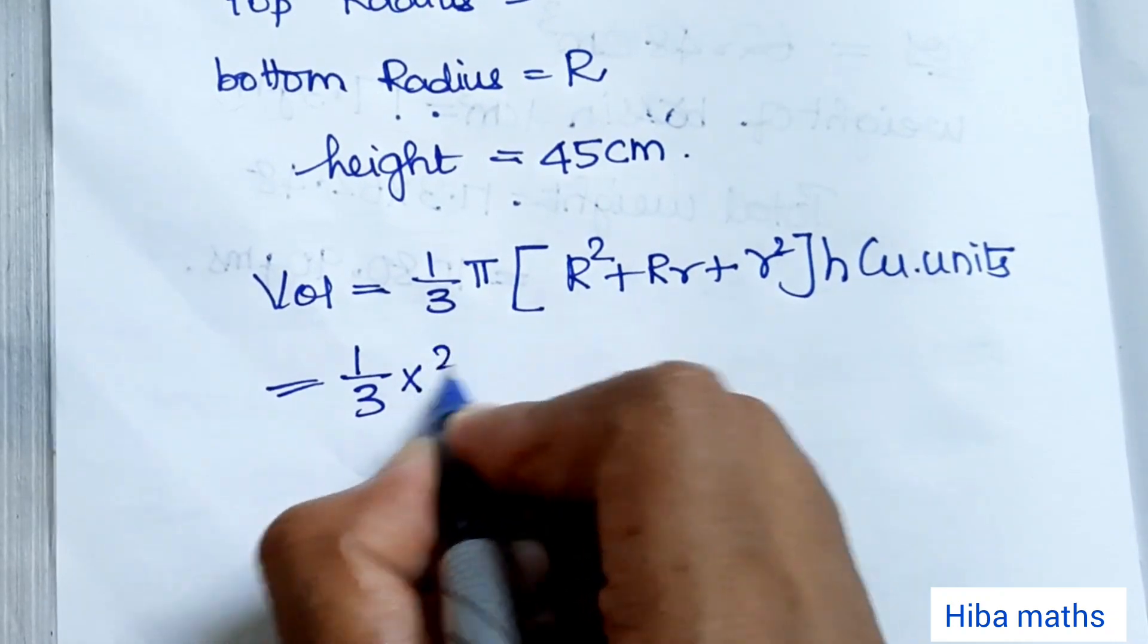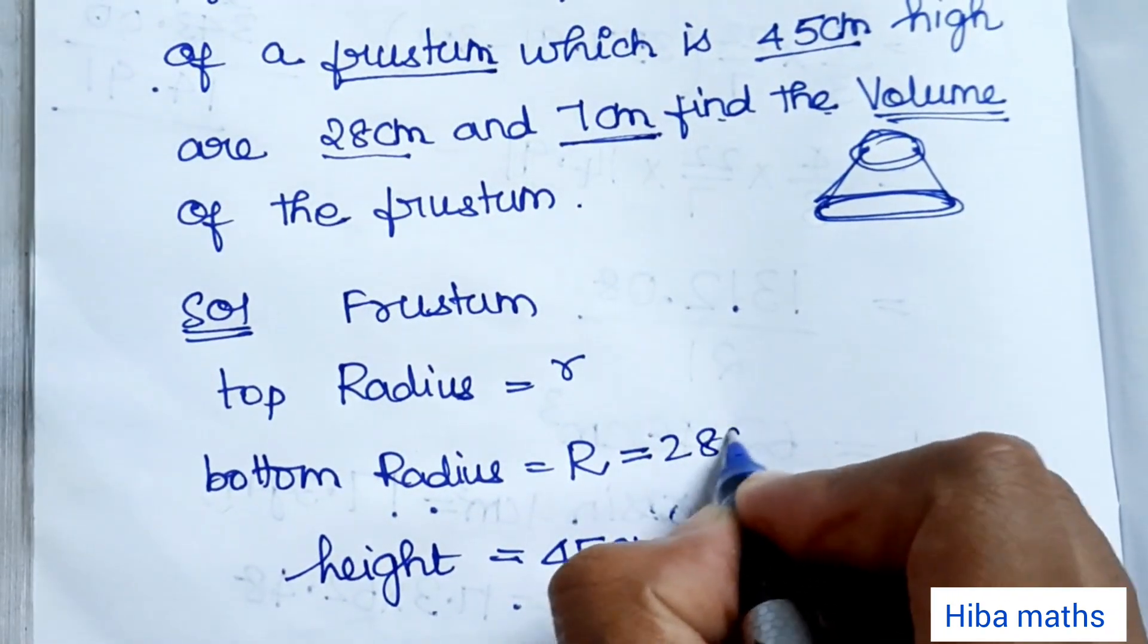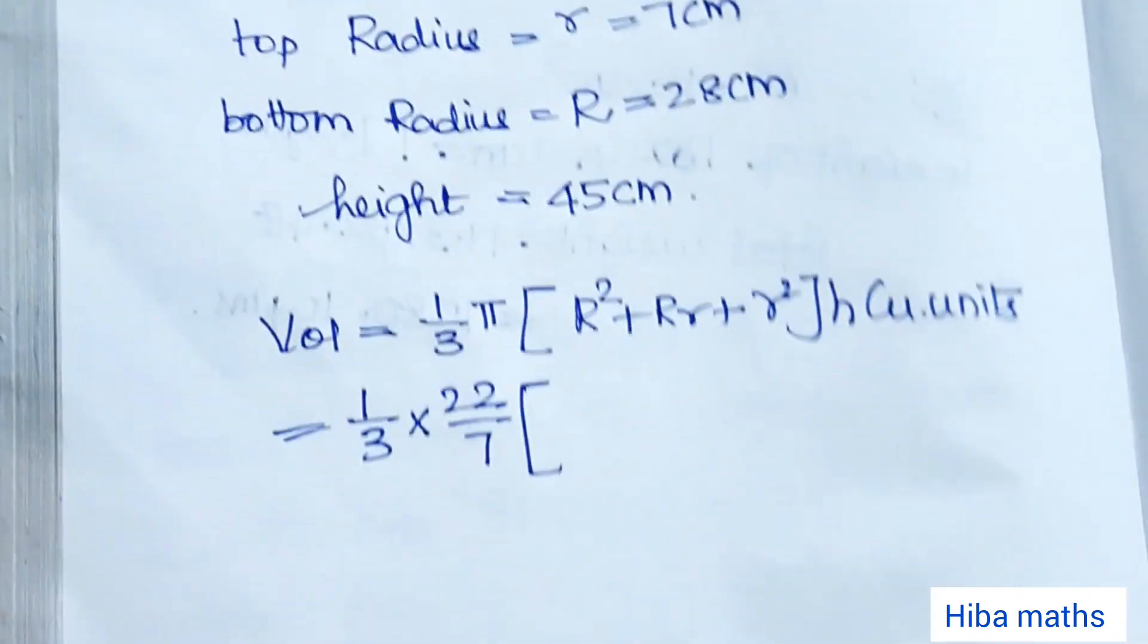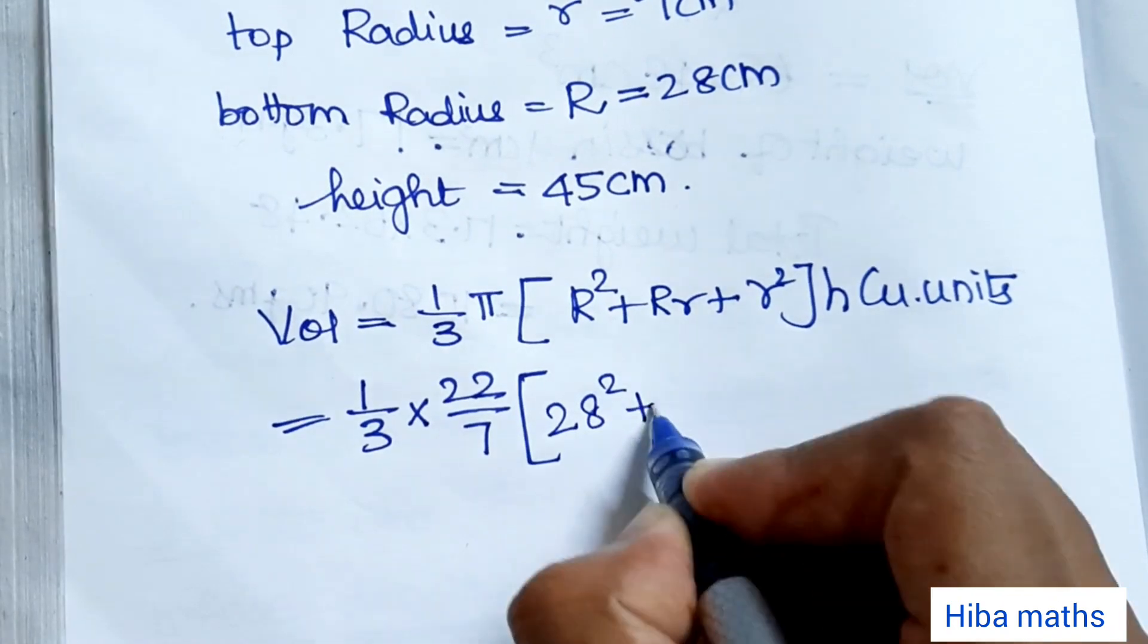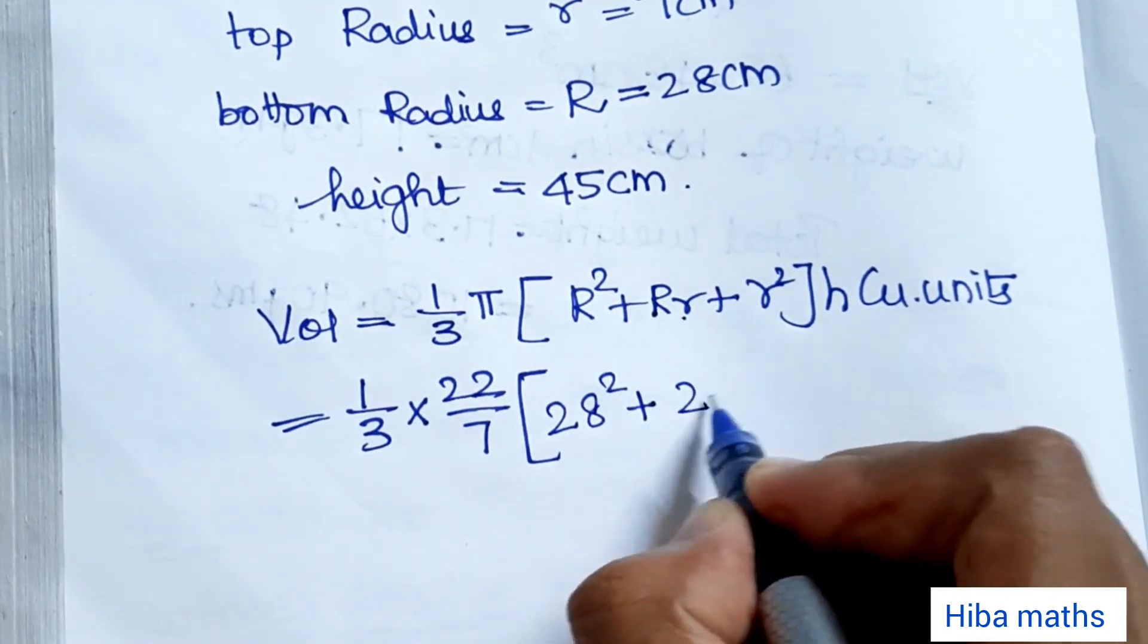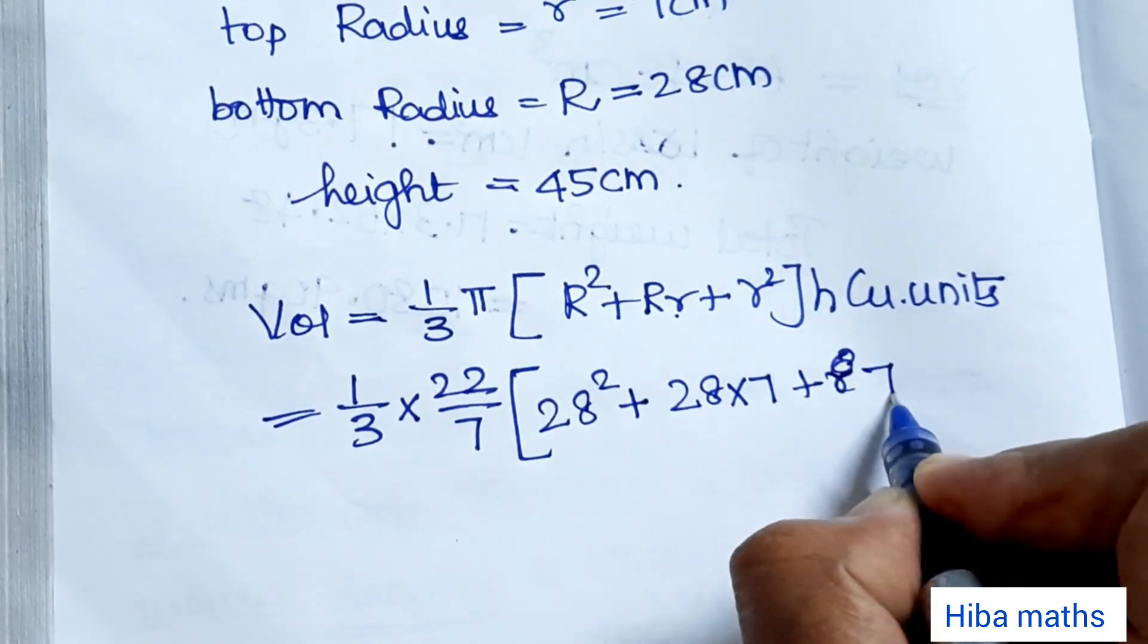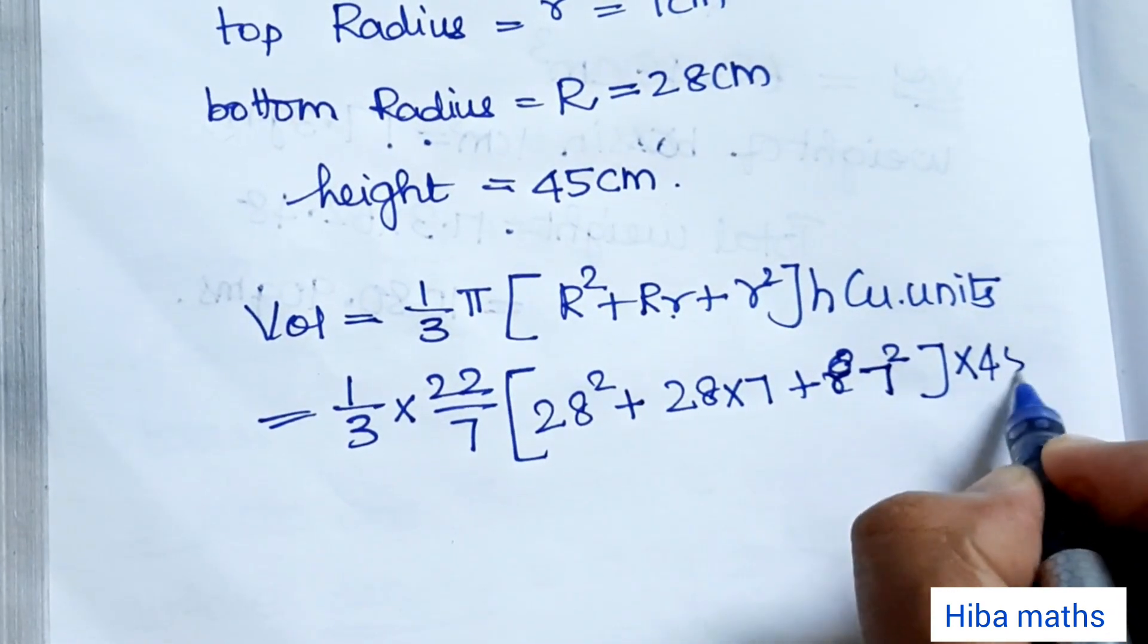1 by 3 into pi is 22 by 7. Capital R value is 28 cm, small r value is 7 cm. Now capital R value is 28 square plus R into small r, 28 into 7 plus r square. Small R value is 7, 7 square. Height is 45.